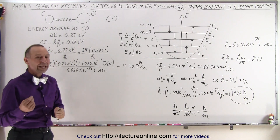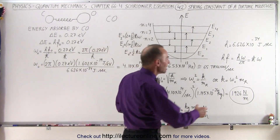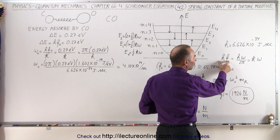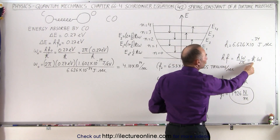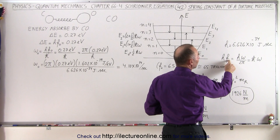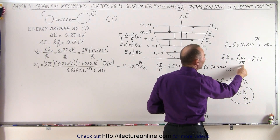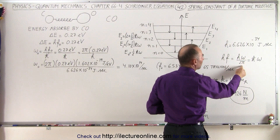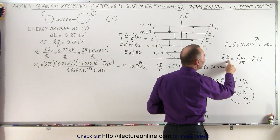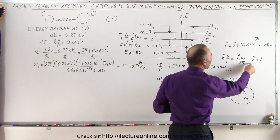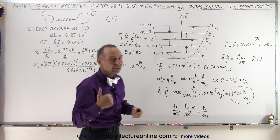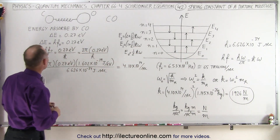Now let's relate the energy of a photon to h-bar omega. We know that the frequency can be written as omega divided by 2 pi, and h divided by 2 pi is equal to h-bar, so h times the frequency is the same as h-bar times omega, where omega is the angular frequency of the oscillation.